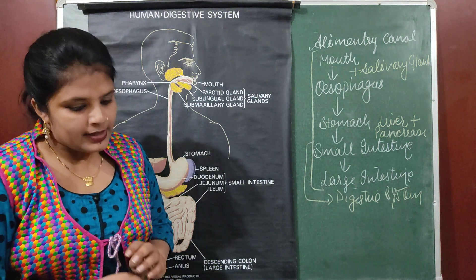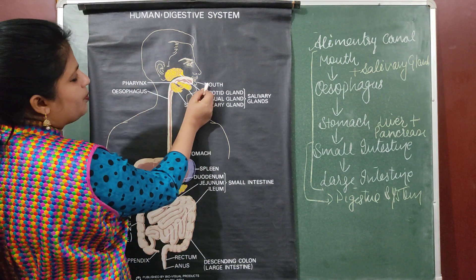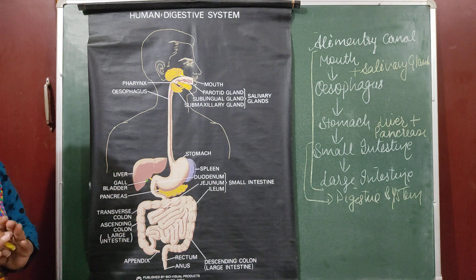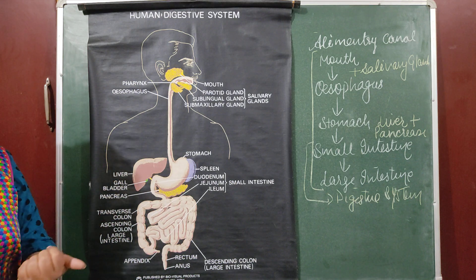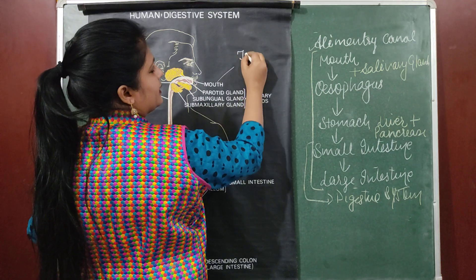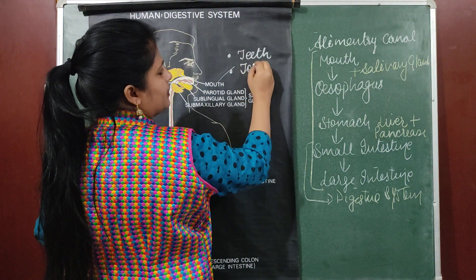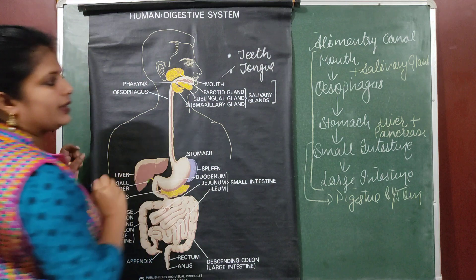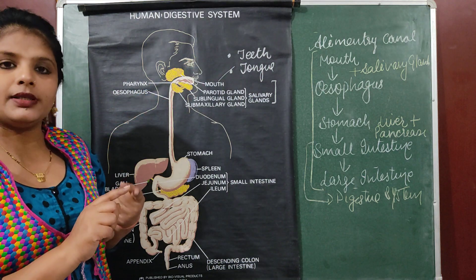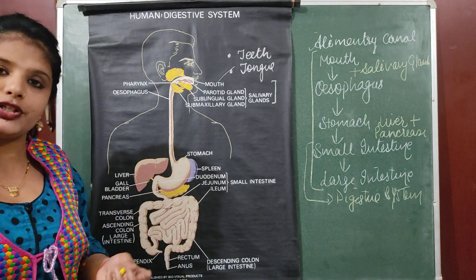When we are talking about the digestive system, along with the alimentary canal we include all the digestive glands. First, food enters through the mouth. In the mouth there are three parts: one is teeth, one is tongue, and one is salivary glands. The function of teeth is to help in biting, tearing, chewing, and crushing of the food.